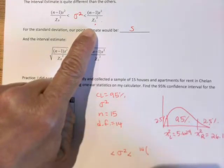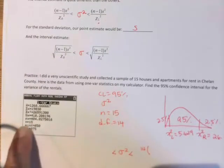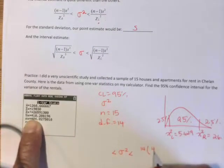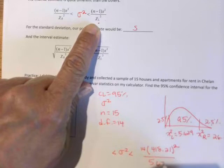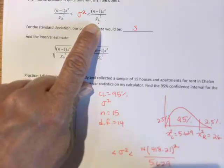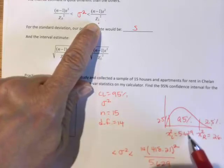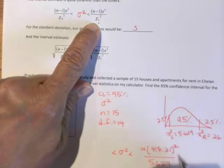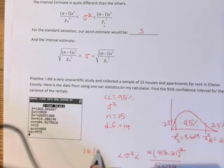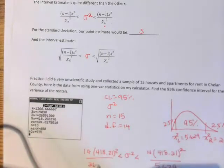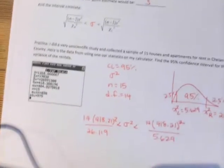So I need n minus 1, so that's 14, times s-squared. Well, here I'm going to look at my screenshot. My s is 418.21, and we need to square that, and then we divide by chi-square left, so chi-square left is 5.629. So notice, even though it's on the right-hand side, we're going to use the left value because that's the smaller one, so that gives us the bigger value for the left-hand side. Now, when we go to make our right-hand side, it looks almost the same, except for that value on the bottom changes to be the chi-square right value.